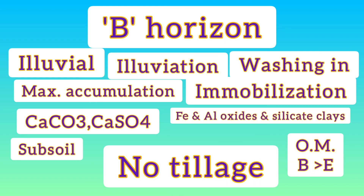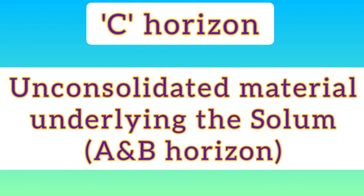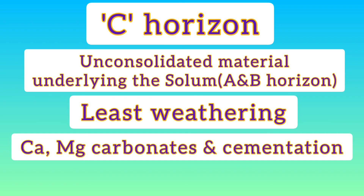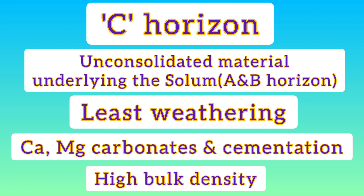The last one is the C horizon. It is the unconsolidated material underlying the solum — that is, the A and B horizons. It is the zone of least weathering, with accumulation of calcium and magnesium carbonates and cementation. At times it also has high bulk density.